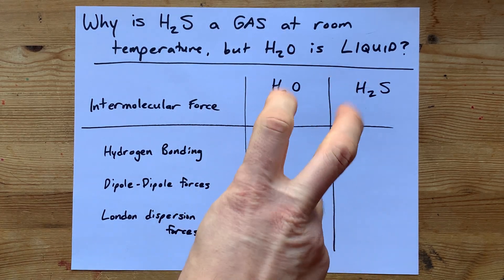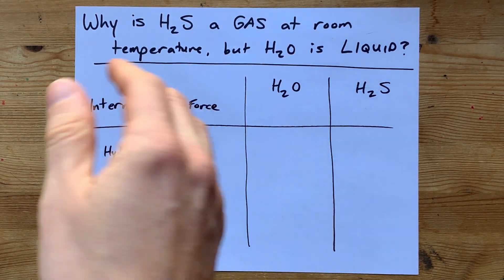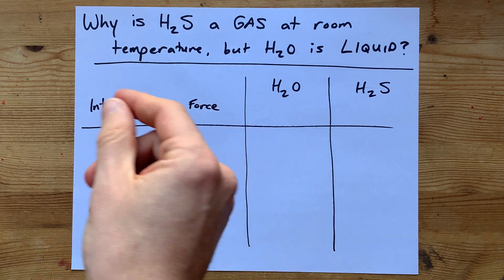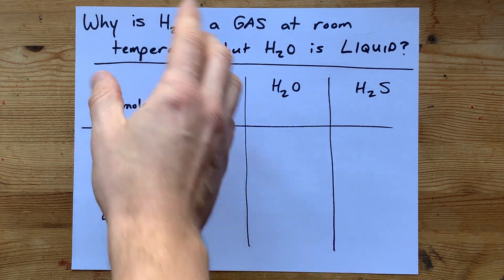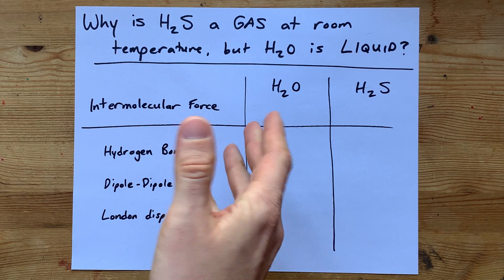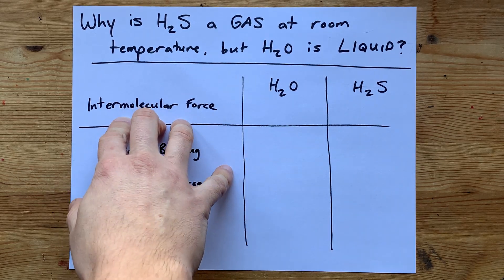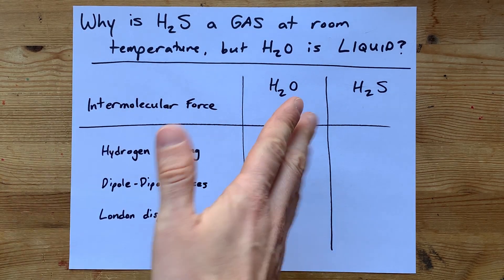This all comes down to the boiling point, the temperature at which a molecule goes from liquid to a gas. H2S has a lower boiling point, and that's because of intermolecular forces. If you're asked for the why, I'll tell you right now.